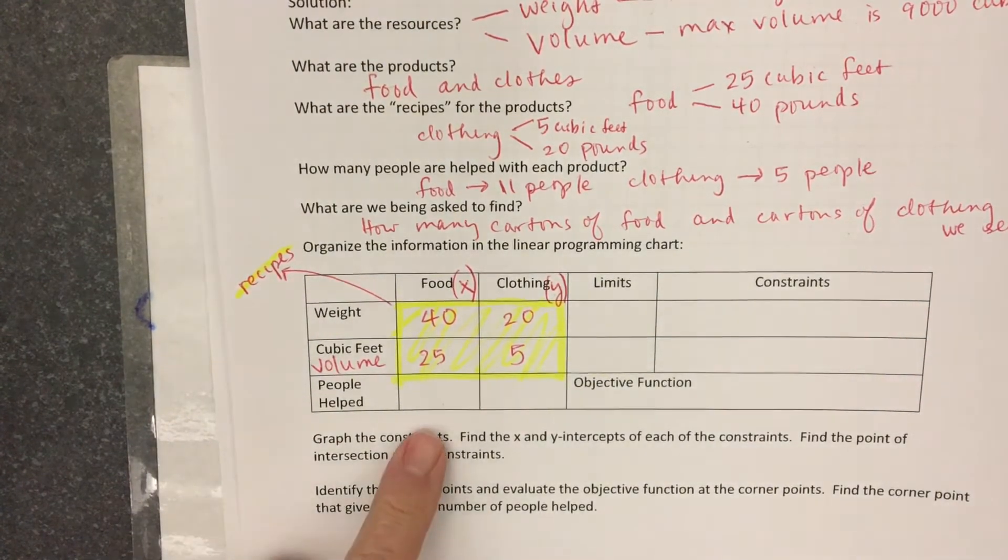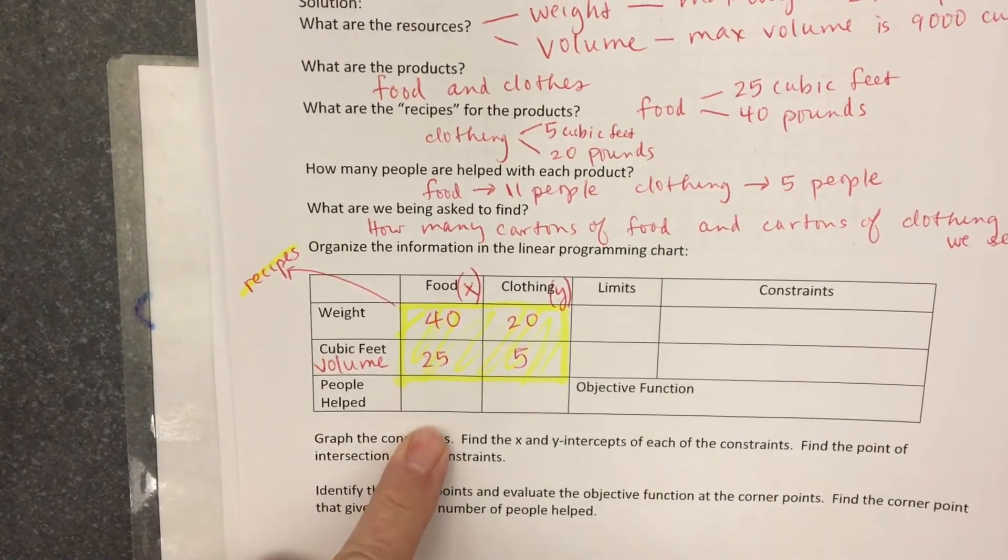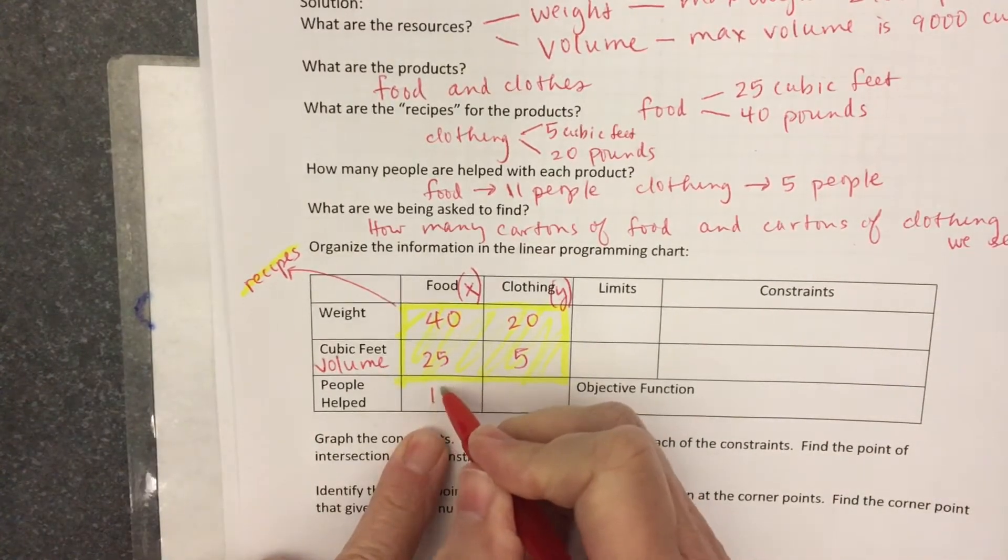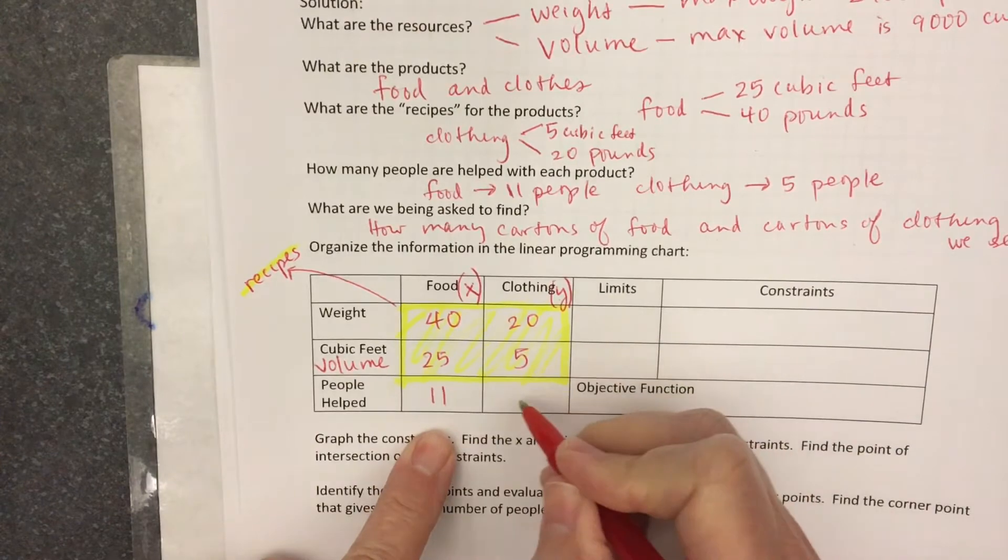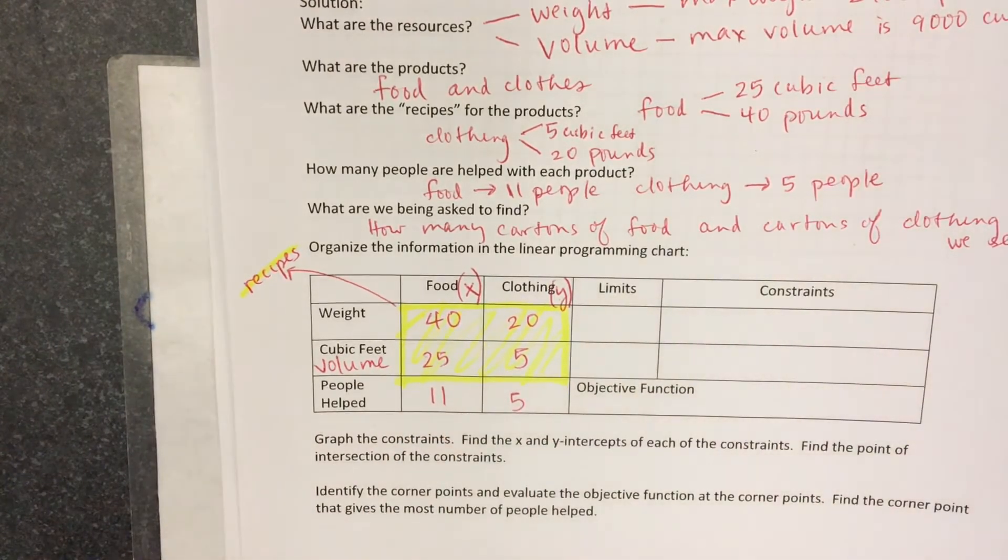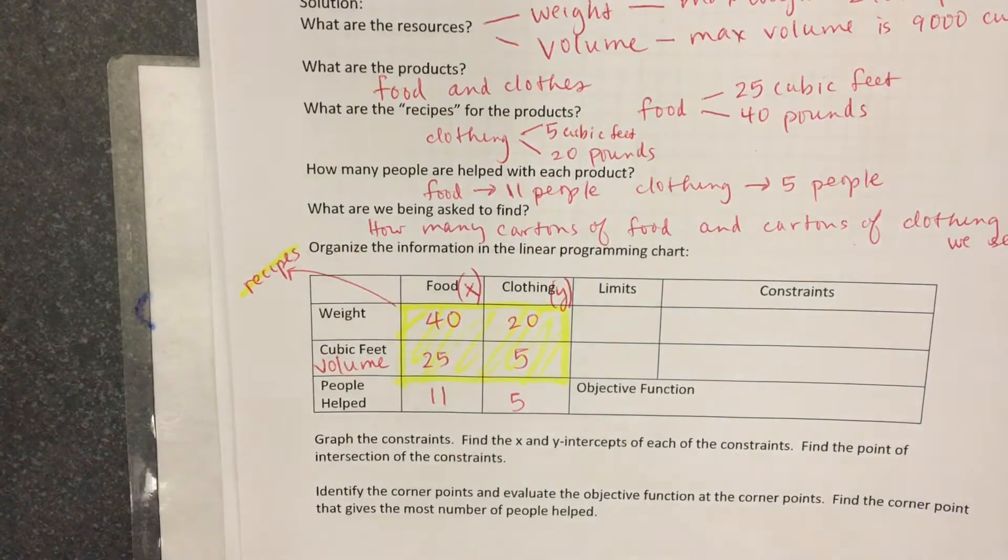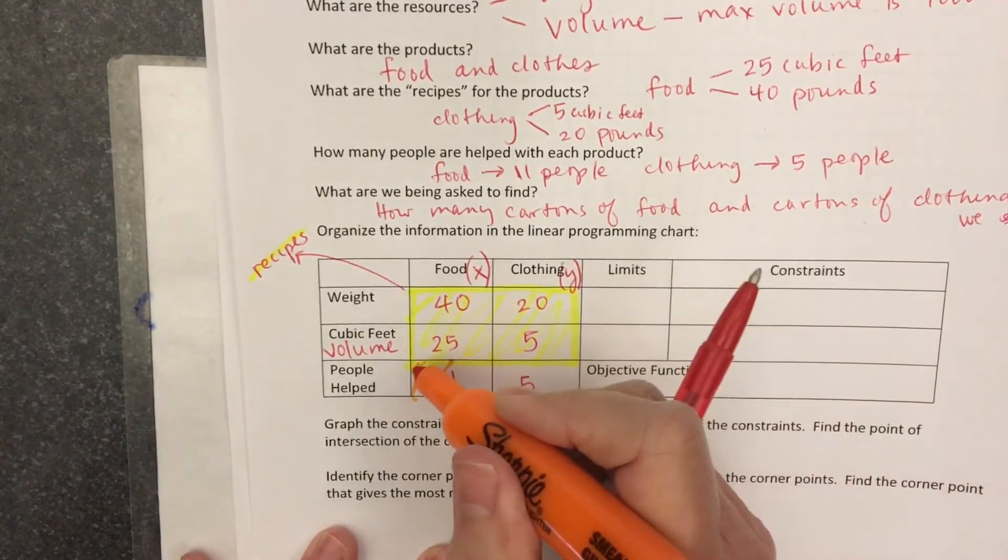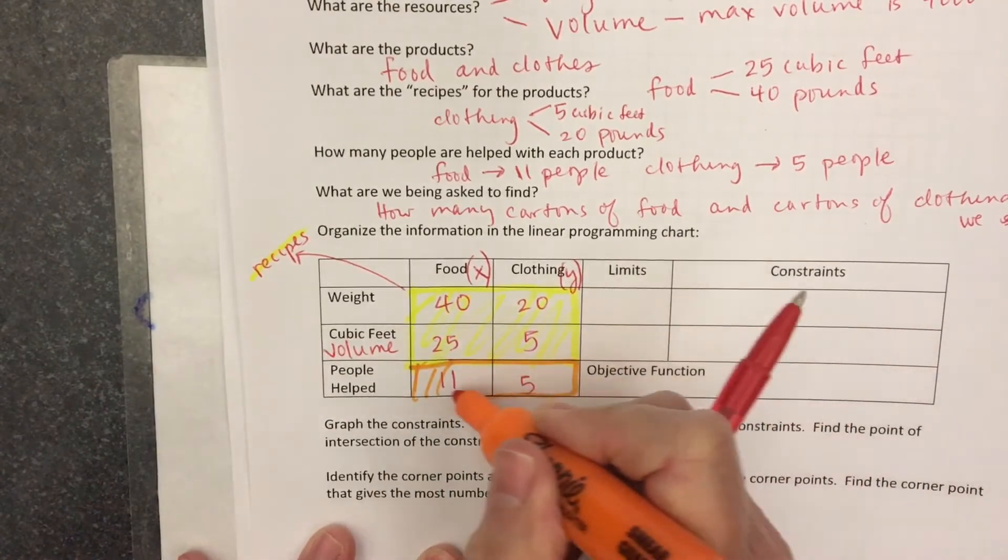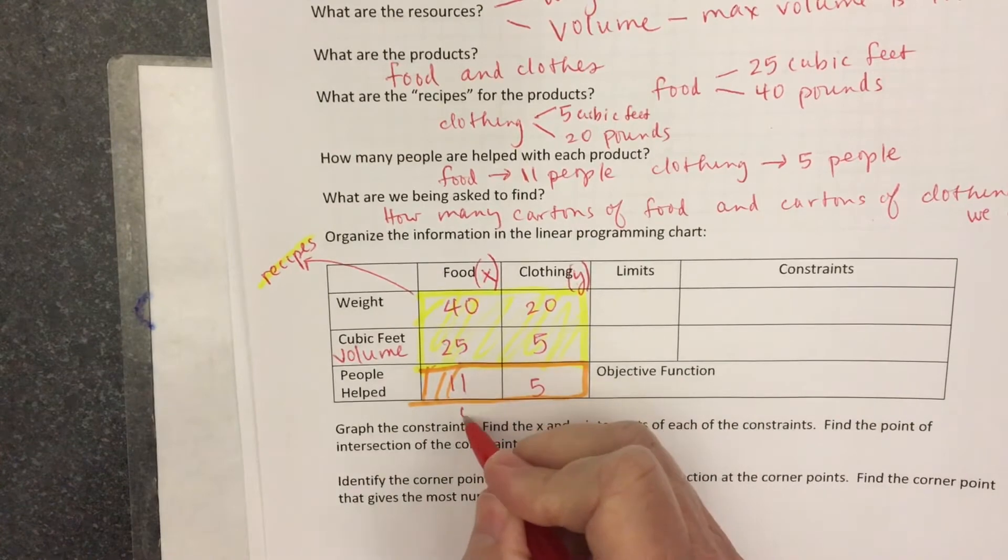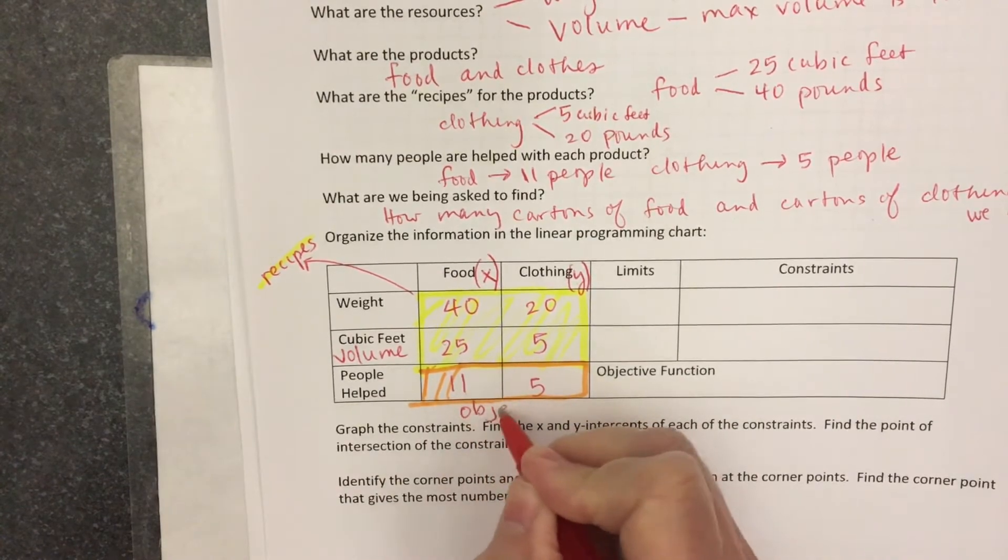Let's fill in people helped. There are 11 people helped with the food and there are 5 people helped with the clothing. I'll put that in a different color. And what I've put in orange, that's the makings of the objective function.